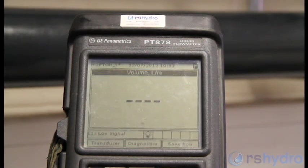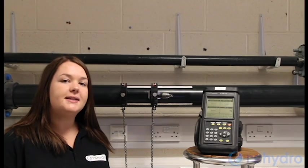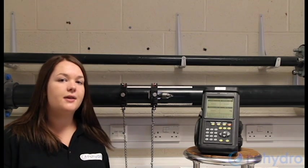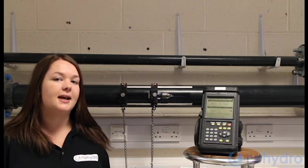The meter returns to the main screen. The flow meter has calculated the spacing of 137.4 mil for a two-traverse installation.